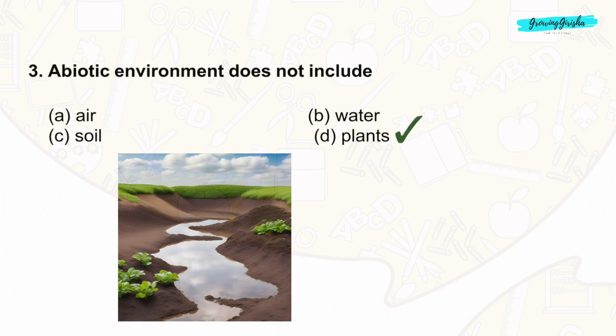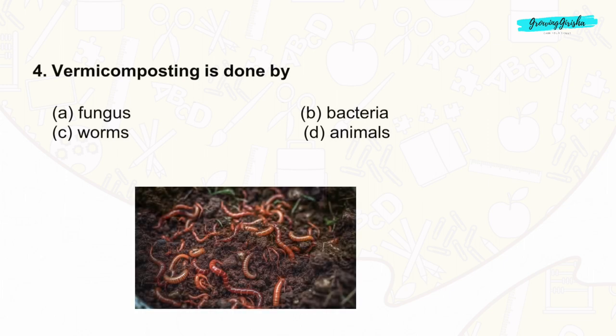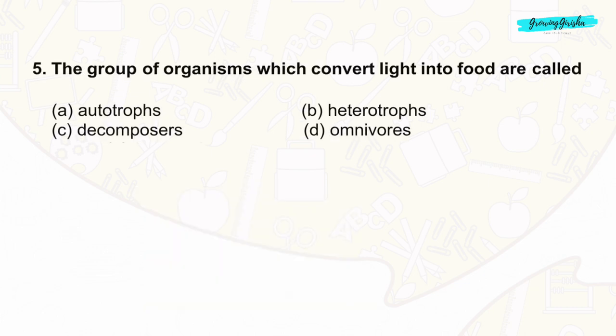Question 4: Vermicomposting is a process of composting organic waste materials using worms. These worms consume organic matter like food scraps and produce nutrient-rich compost through their digestive process.